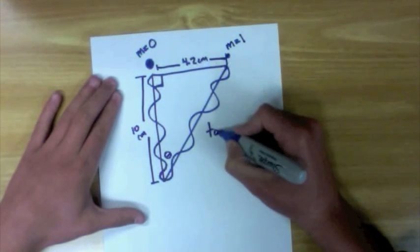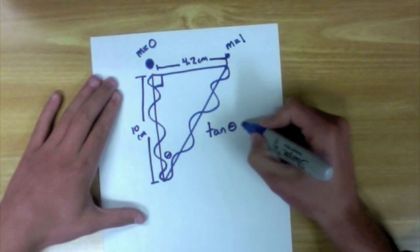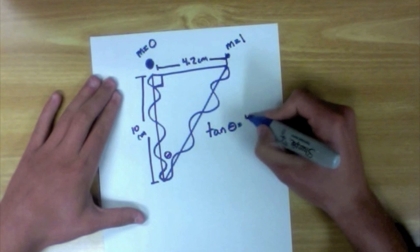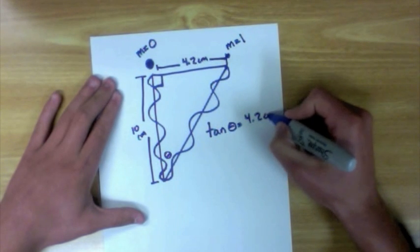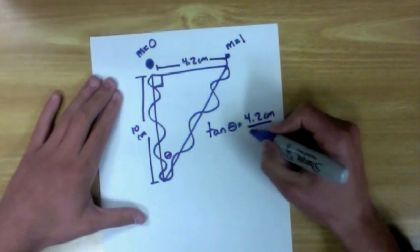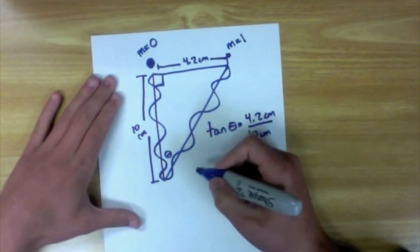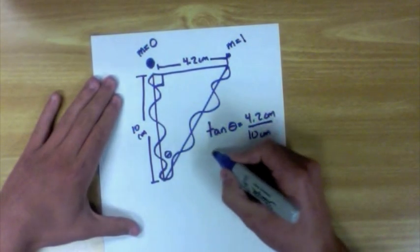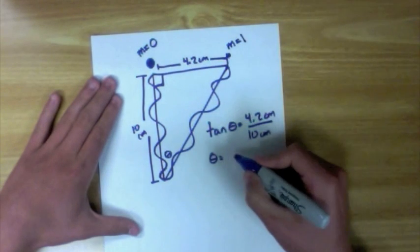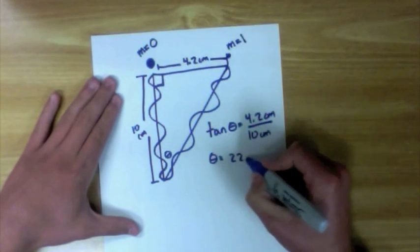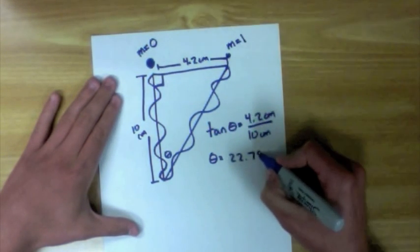Using tangent, we find theta by taking the inverse tangent of 4.2 centimeters divided by 10 centimeters. After calculating theta, we find that the angle is 22.78 degrees.